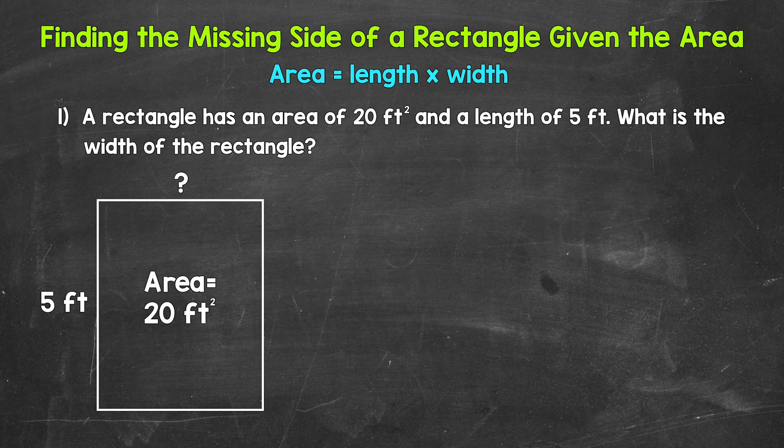Remember, we find the area of a rectangle by multiplying the length and the width. So area equals length times width. But here we already have the area and we need the width. So what do we do? We actually use the same formula and use what we know — what we are given — to figure out what we don't know. That's the width here. So let's write our formula out.